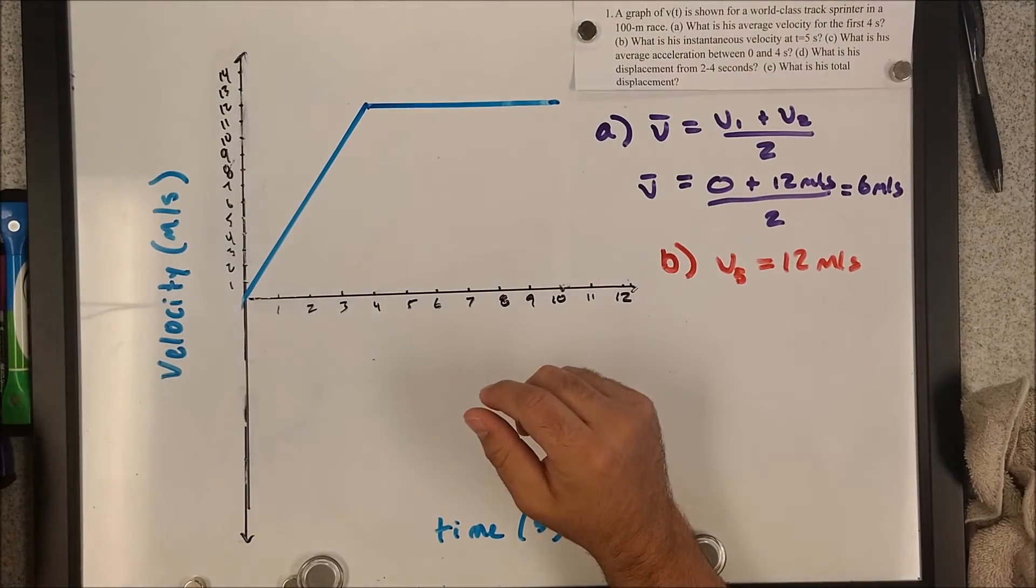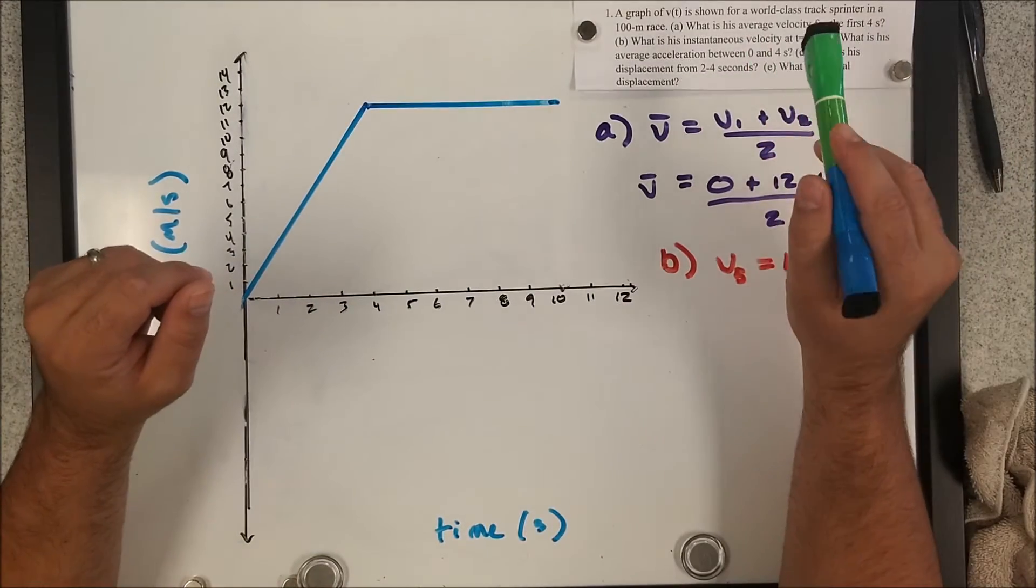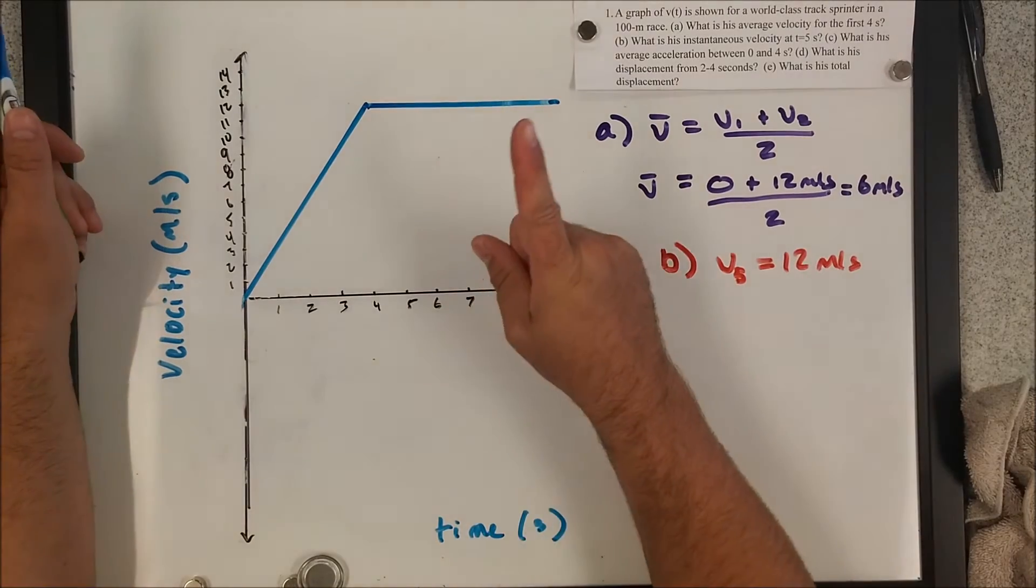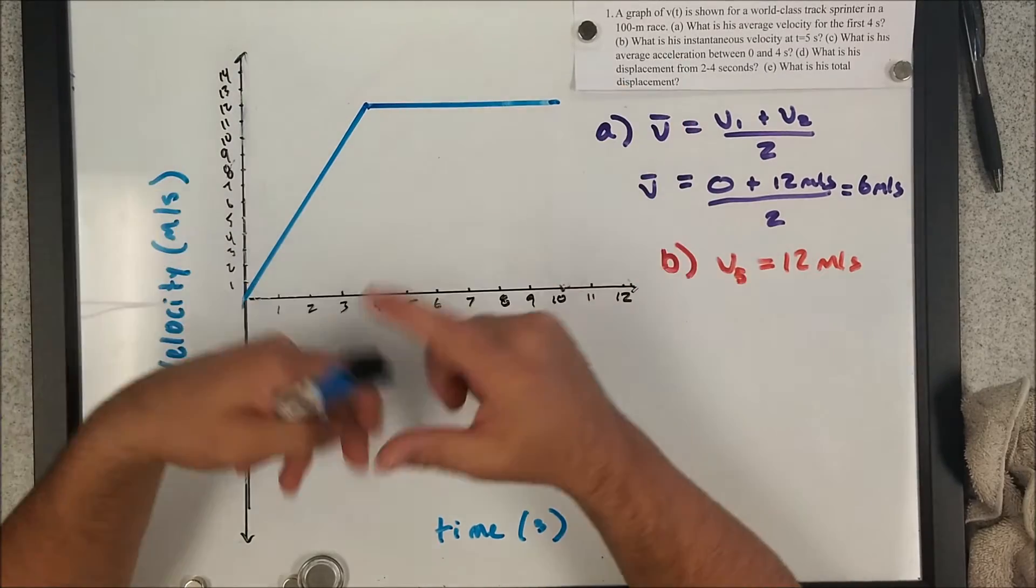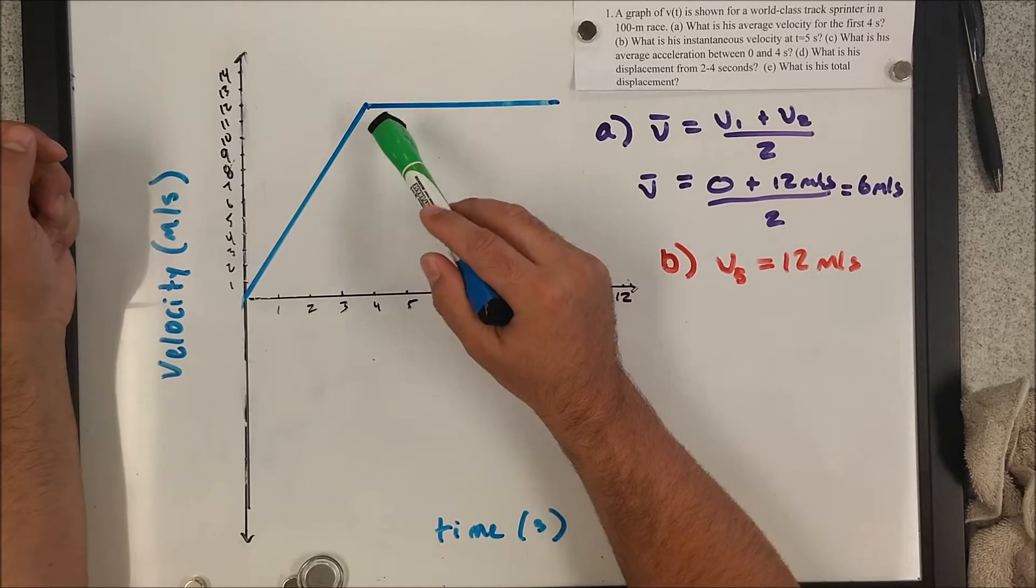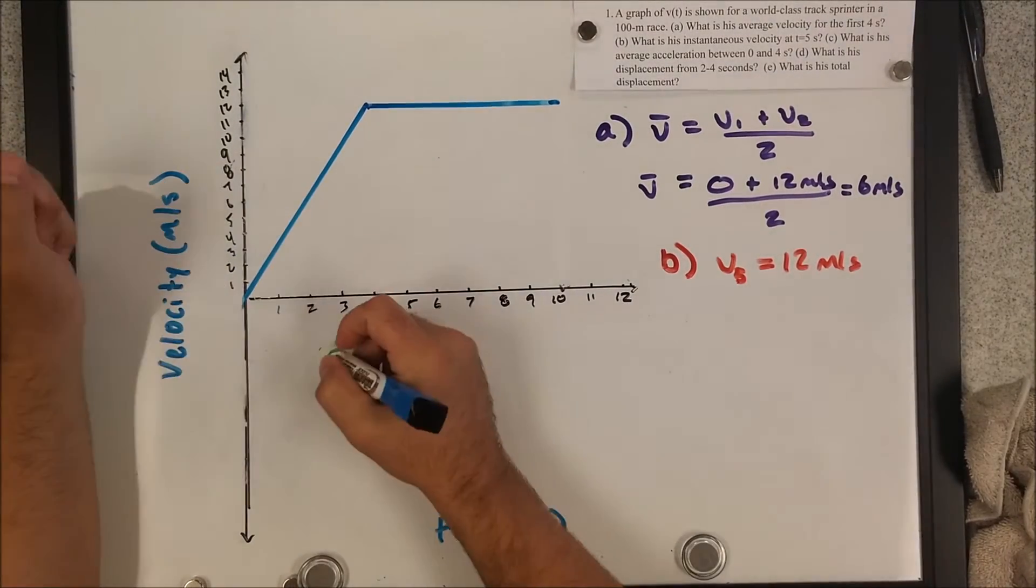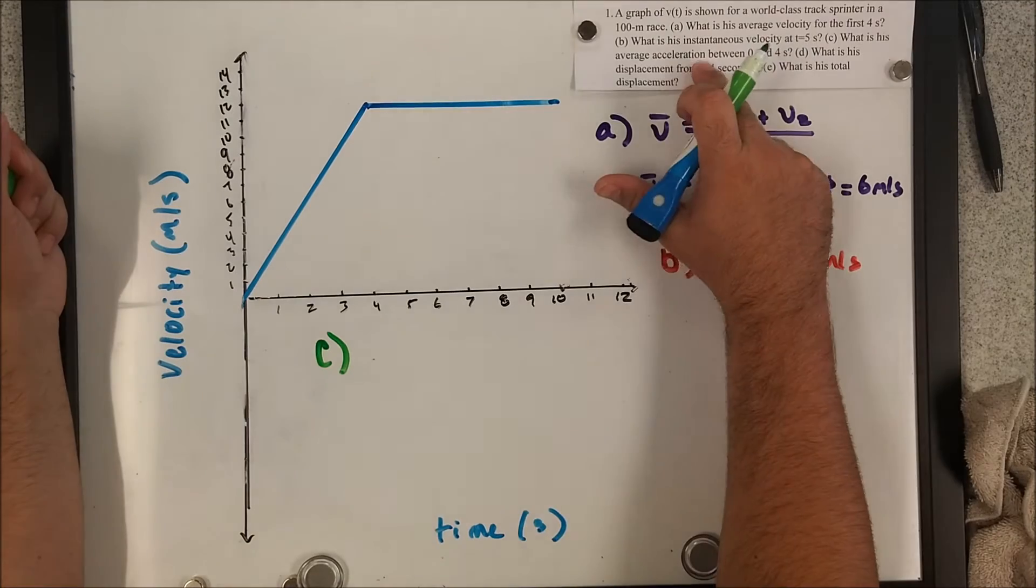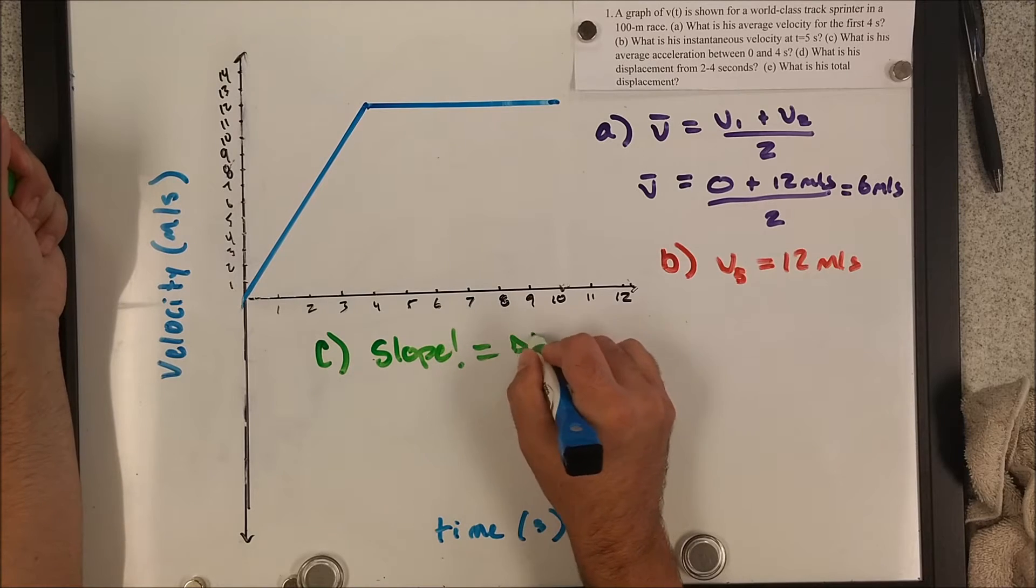C is where it starts to change a little bit. We want to know the acceleration between zero and four seconds. For that, we got to recognize how to find acceleration on a velocity time graph. Remember, the first thing you do is identify what does slope represent. The second thing you do is identify what does the area represent. So in this case, we're talking about the slope of this line from zero to four seconds. And the slope of anything is going to be the change in the y variable, so the change in V, over the change in the x variable, which is the change in time.